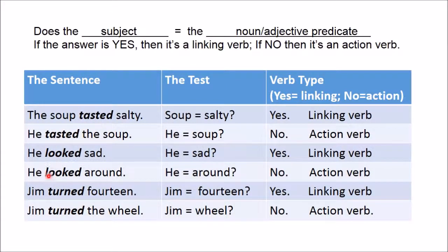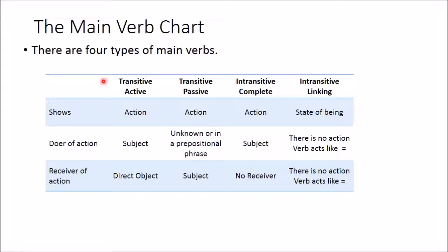So you can put these words through the test: does the subject equal the noun, or does the subject equal the adjective? If the answer is yes, then it's a linking verb. That is how you can tell between linking verbs and action verbs. This chart here will be really helpful, especially as a study tool. These are the four main verb types — three action verbs and then the state of being verb, or linking verb.